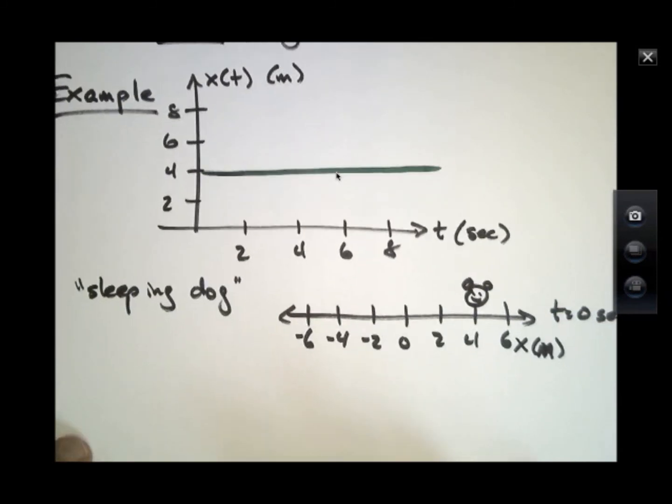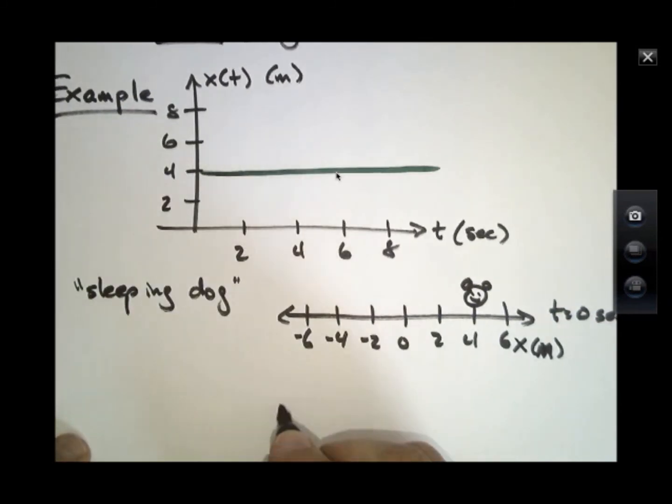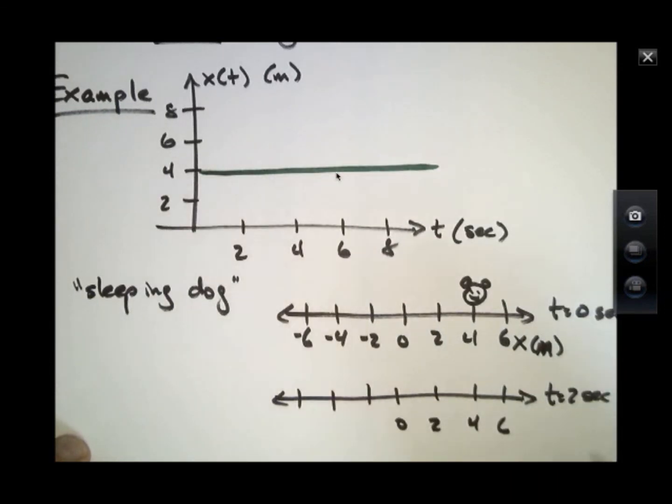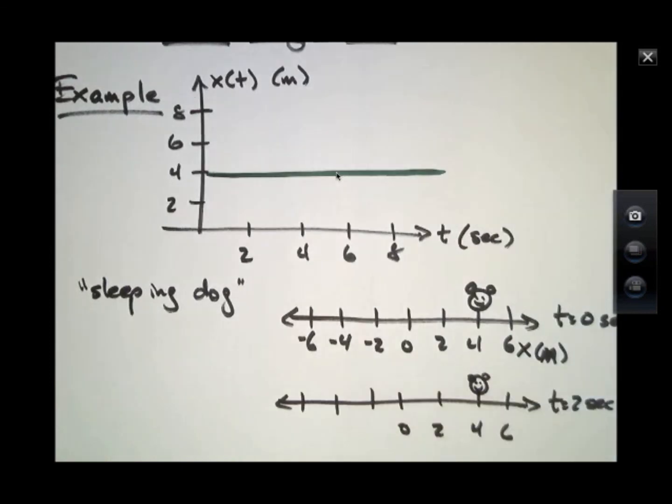And at a later time, it's the same thing. Here's our number line later. At times t equals 2 seconds. And where's FIDO now? Well, if the function is really constant like this, then FIDO is still sitting here. Sitting at 4 meters. So that's why I call it the sleeping dog. It's just located at constant position all the way through the time.